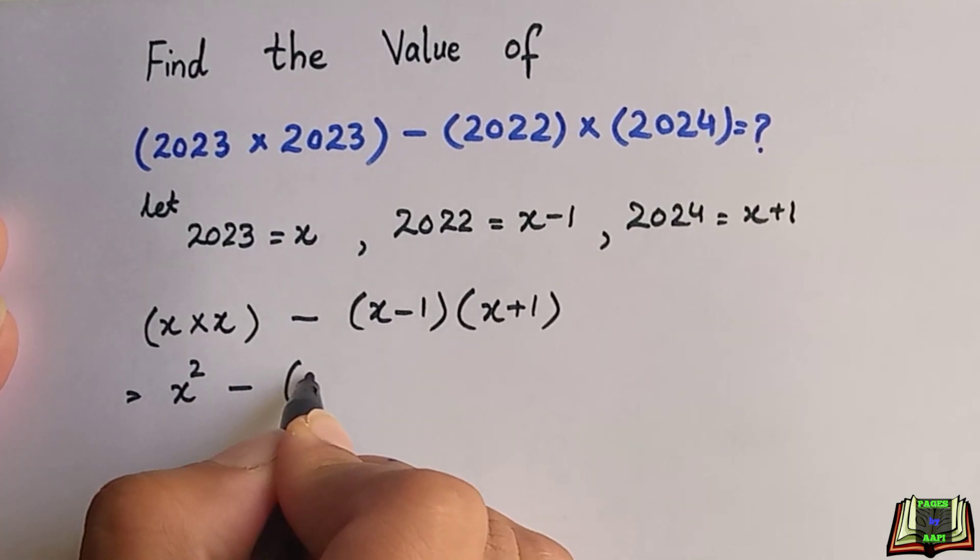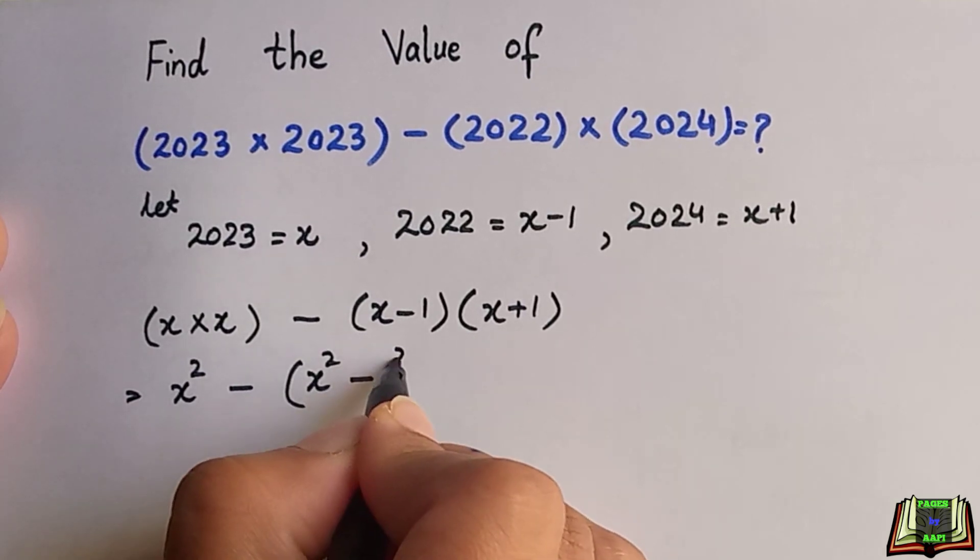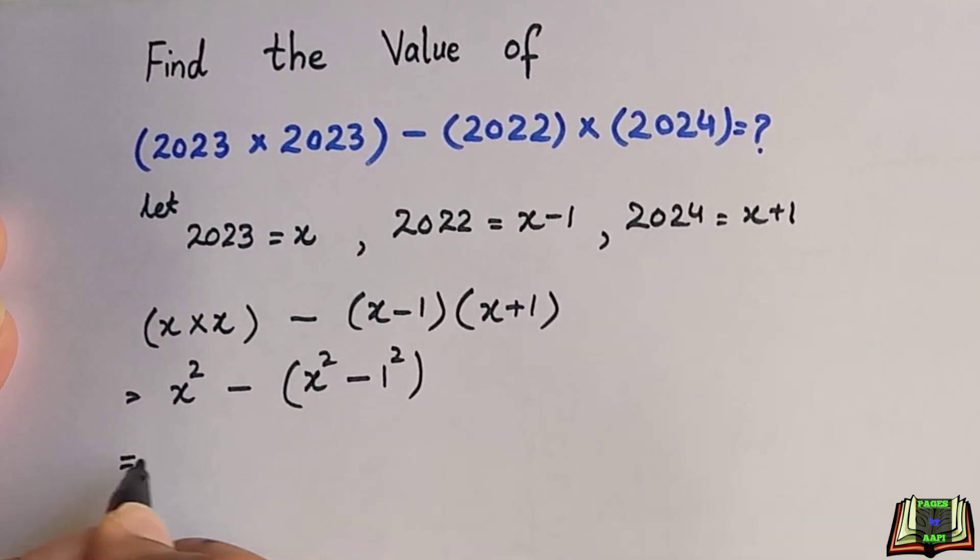x times x is x squared minus, this x minus 1 times x plus 1 can be written as x squared minus 1 squared. This is an identity, a squared minus b squared.